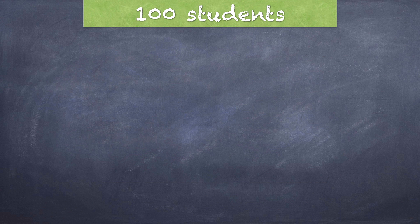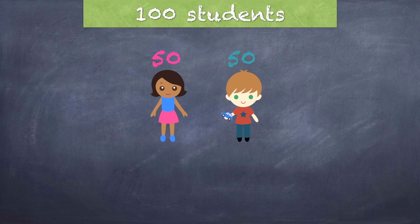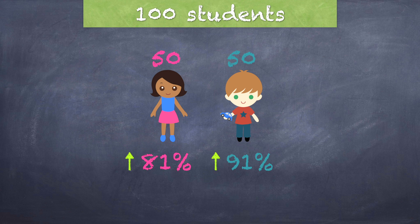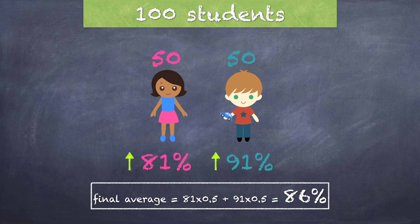Now, imagine that in the next year that teacher had 50 female students and 50 male students. Suppose that the female students' average became 81 and the male students' average turned out to be 91. Both male and female average scores became better. Yet, one day, the school's principal called the teacher asking why she became worse at teaching, since the average of the class dropped to 86%.